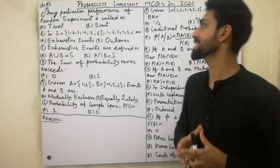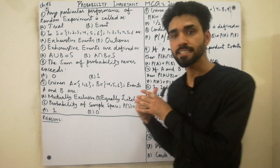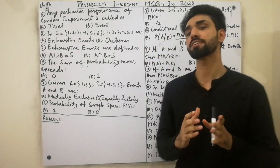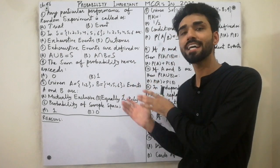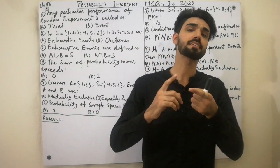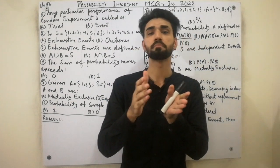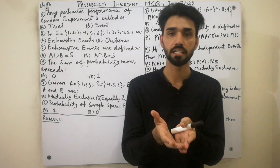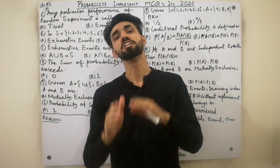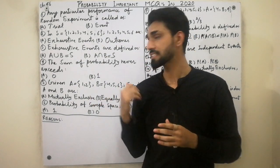Assalamu alaikum dear friends. Today I am here to explain chapter number 6 — probably important MCQs from 2020. Each MCQ is very important; I will tell you reasons and solutions for why the answers are correct. If you want other chapters — chapter 1 introduction to sets, chapter 2 presentation of data, chapter 3 measures of central tendency, chapter 4 measures of dispersion, index numbers — visit the description or playlist below.